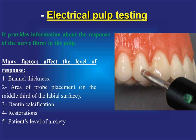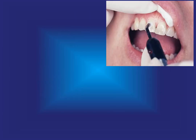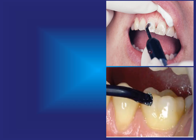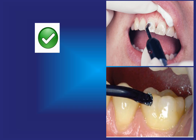Other factors affecting the electric pulp tester response include: the area of probe placement — it must be in the middle third of the labial surface — as well as dentinal calcification, restorations, and the patient's level of anxiety. We must place the probe on the labial side of the tooth and never on the occlusal side, because that area has a lot of enamel and acts as an insulator.